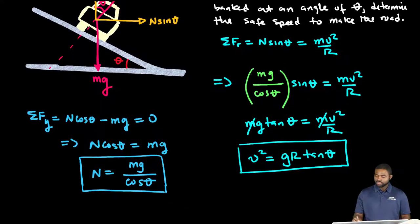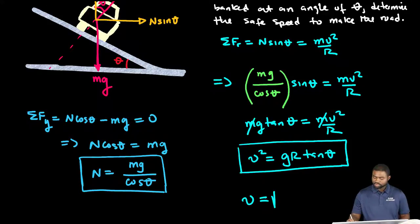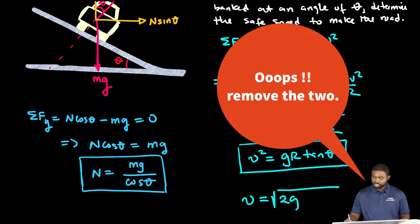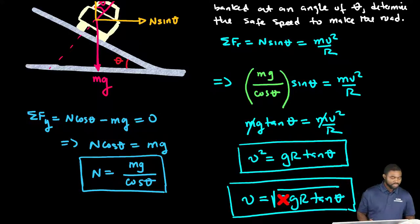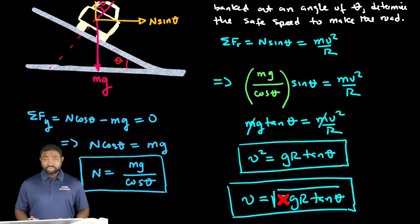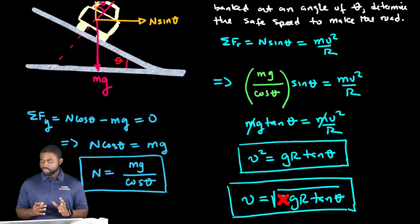Now, in other words, v is equal to the square root of gR tan theta. This defines the speed limit of the road. What do you notice here? The speed limit depends on the banking angle and not the coefficient of static friction.